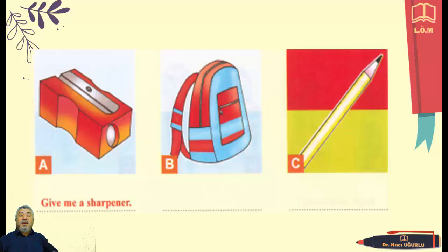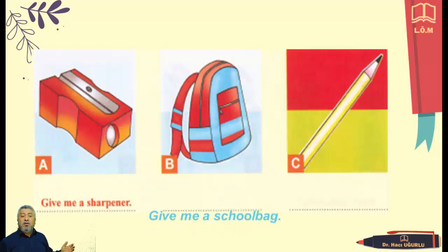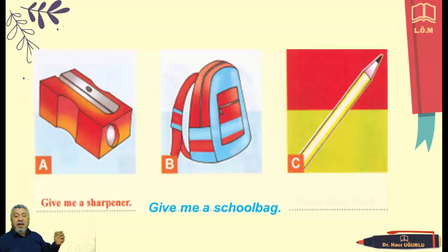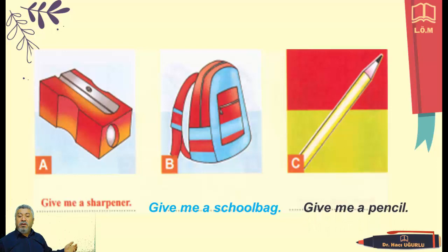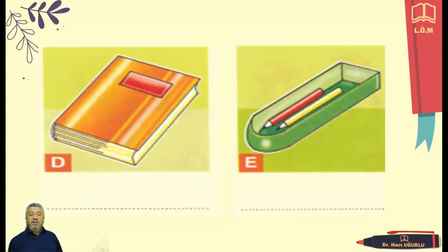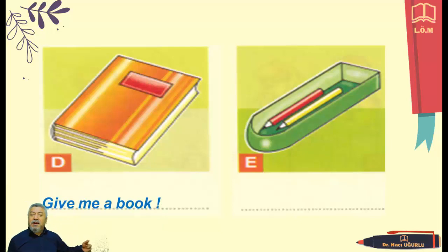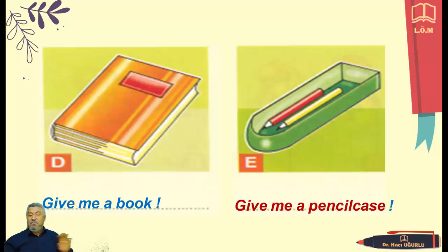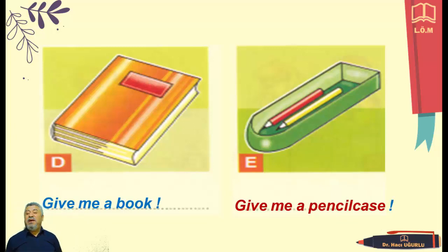And now: give me a sharpener. Please, give me a sharpener. It is also an order. And now: give me a school bag. Or: give me a pencil. And we have got two pictures — what can we say? First picture: give me a book. And the other: give me a pencil case. They are orders — they are imperative sentences. Give me a book. Give me a pencil case.